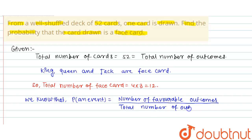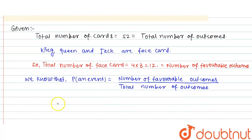So here the favorable outcome is the number of face cards. You can write here, this is equal to the number of favorable outcomes.